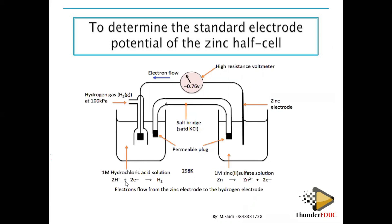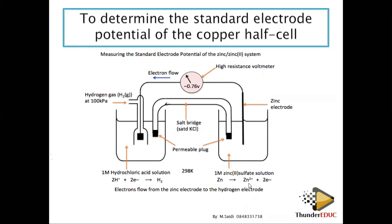Zinc reacts at the anode to form Zn²⁺ ions and release two electrons. These electrons move to the hydrogen electrode where hydrogen ions in solution accept the two electrons to form hydrogen gas. Zinc is oxidized from Zn(0) to Zn²⁺. If the electrode potential is negative, it indicates a strong reducing agent; if positive, it indicates a weak reducing agent.